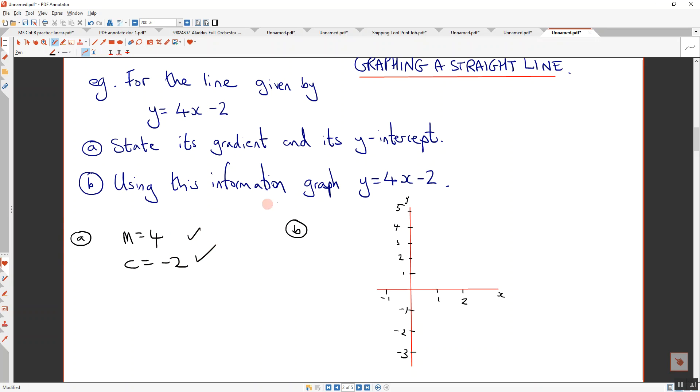Using this information, we need to graph this. So what's our starting point? Where do we start when we are going to graph this? Sam? Negative 2. Right, so we start down at negative 2 because that is where the graph goes through. Then how do we work out our next point?